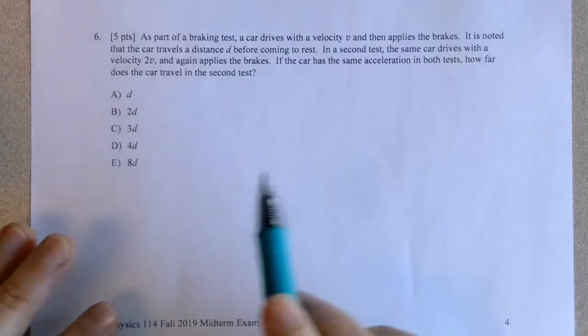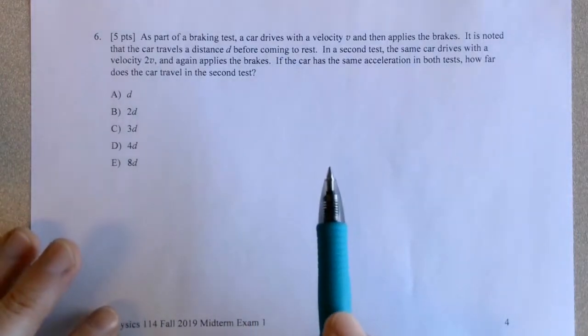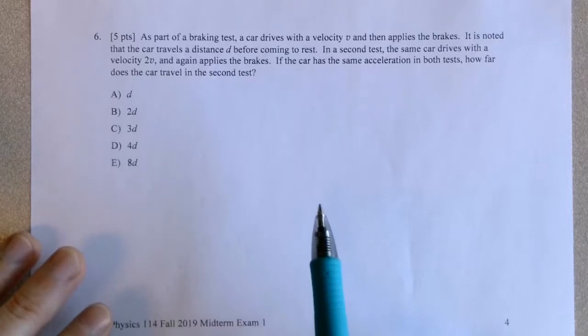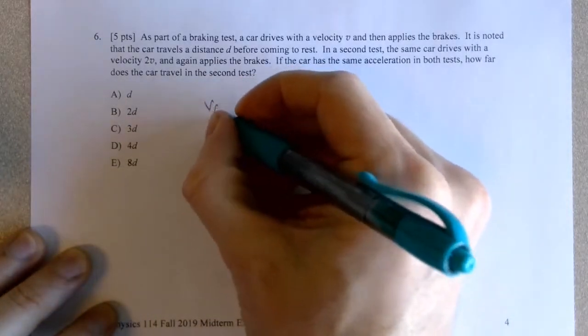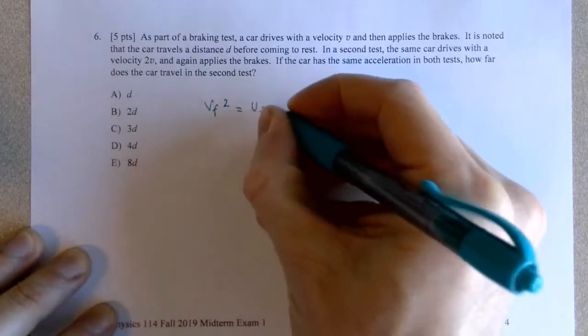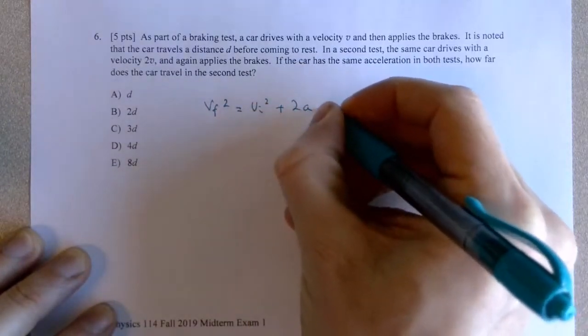So we can write an equation that relates the initial velocity to the distance traveled in the braking test as follows. We know that VF squared equals VI squared plus 2A dot delta X.